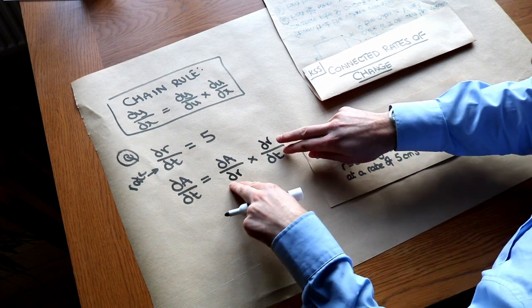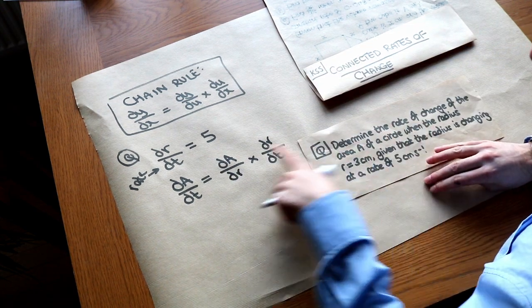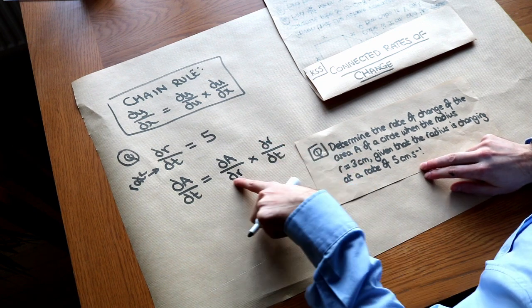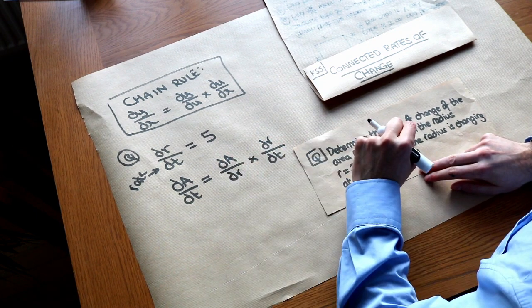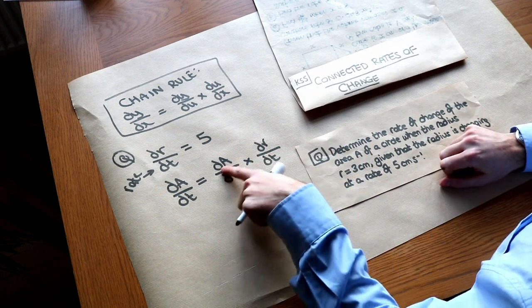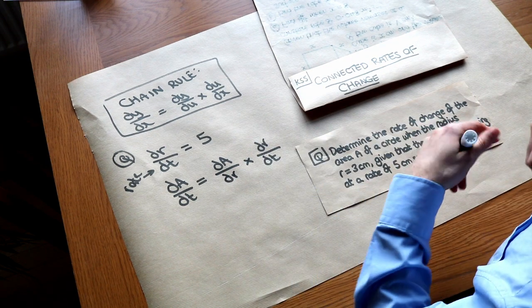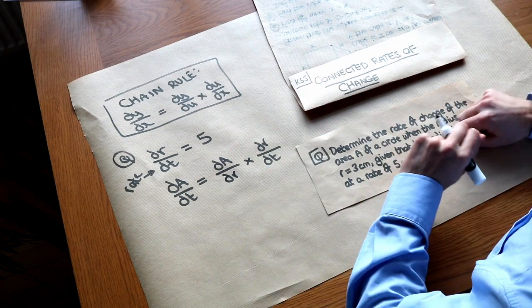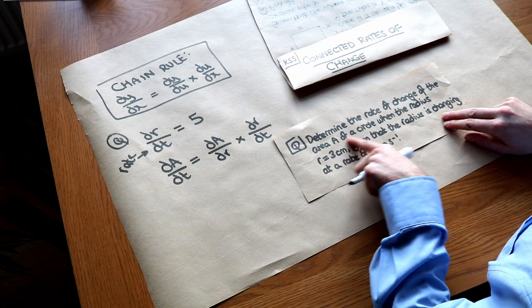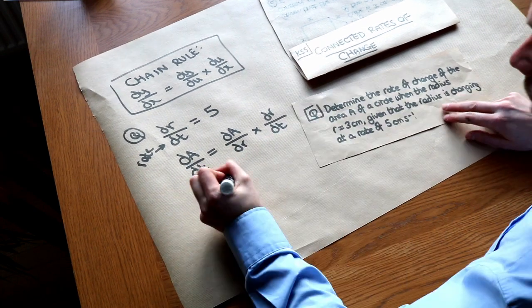When we times these fractions together, the drs would cancel and we would get dA over dt. We know what dr over dt is, that's 5, so this thing here we can replace with 5. But what is dA over dr? Always in these connected rates of change problems, one of the values will be given, and the other value you have to use some kind of geometric formula. That might be the area of a circle, the volume of a cylinder, that kind of thing. In this case, we're talking about the area of a circle.